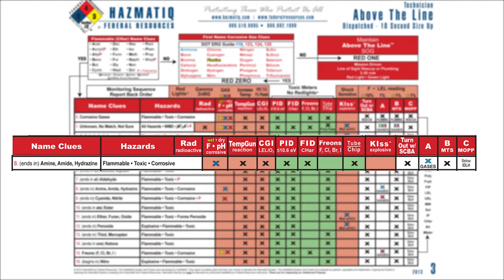We sized up that this one was a gas that was an acid, but look — pH is blue. So it's not a gas that's an acid; it's a gas that's a base. Then we say it's flammable, so we look at the CGI or the LEL meter — that's our flammable meter. We're going to put an X there to measure flammability.